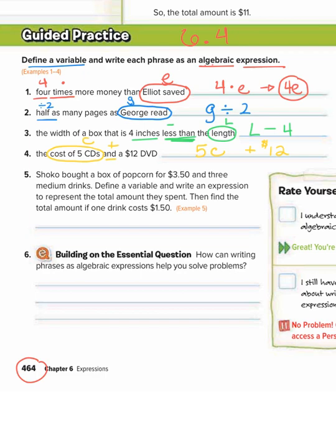So that whole thing would be our expression. Number 5, Shaco bought a box of popcorn for $3.50 and 3 medium drinks. Define a variable and write an expression to represent the total amount they spent. Then find the total amount if one drink costs $1.50. So we want to make sure we answer every part of the question. So let's define a variable.